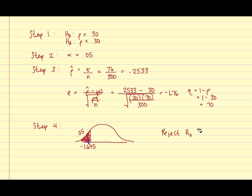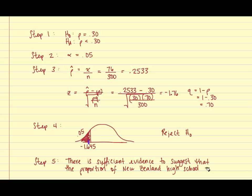Now that we have rejected the null hypothesis, we can state our conclusion, which is step number 5. Therefore, we state that there is sufficient evidence to suggest that the proportion of New Zealand high school students who smoke is less than 30 percent.